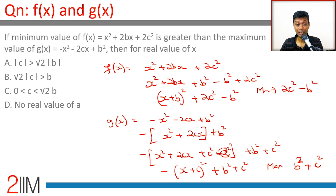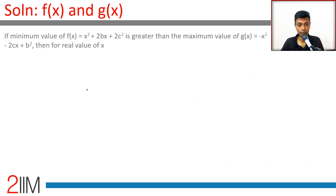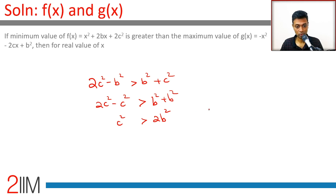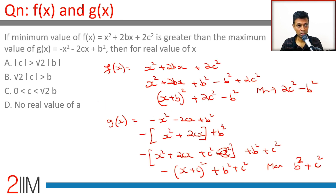Now applying the condition: minimum of f(x) > maximum of g(x), so 2c² - b² > b² + c². This simplifies to 2c² - c² > b² + b², giving c² > 2b², or equivalently, |c| > √2 · |b|. That is our answer: mod c greater than root 2 times mod b.